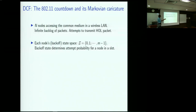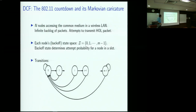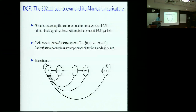The backoff state in this Markovian version of 802.11 determines the attempt probability for a particular node in that slot. If it is in state 0 it will attempt with a certain probability; if in state 1, it will attempt in the next slot with a certain probability. This is a means by which you can decentralize the access. A node can be in state 0 and then maybe jump back to state 0 if the head-of-line packet transmission succeeds. If the transmission failed, it moves to state 1, then to state 2 on another failure, and so on.